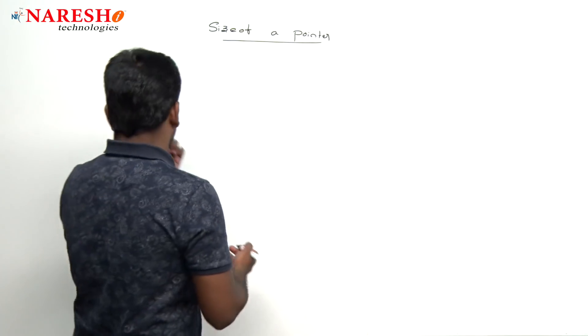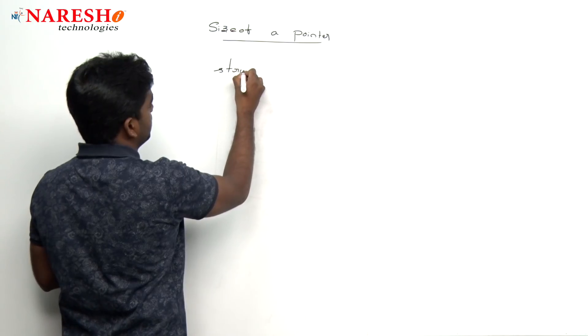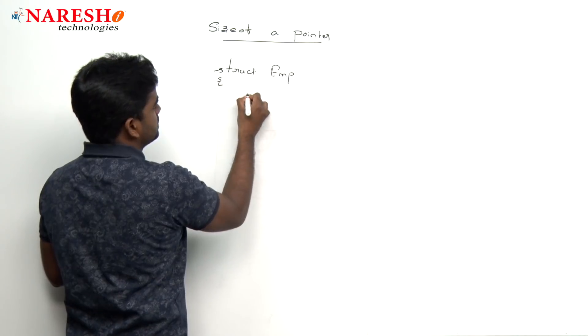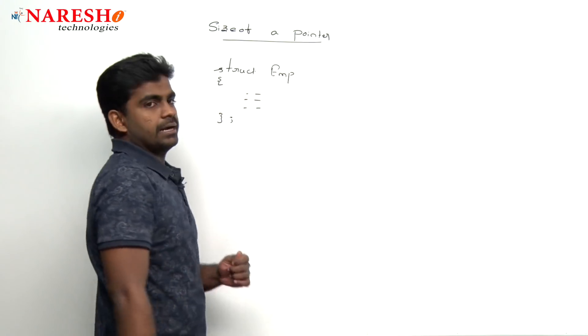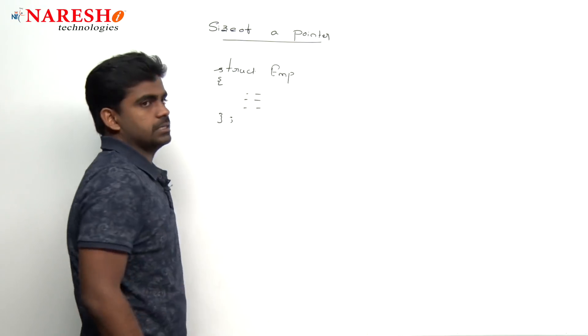Suppose here we are declaring all the types. We are taking one user defined type struct like employee, and here it is information, whatever employee number, name, salary, address, location everything you can write inside this. We know that structures.